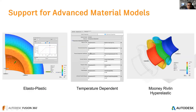Fusion 360, based on Nastran, is not just a beautified solver — it's a very advanced solver that can handle advanced materials like elasto-plastics, hyperelastic materials, and temperature-dependent materials. It can solve the most advanced problems with properly defined material types for particular applications.